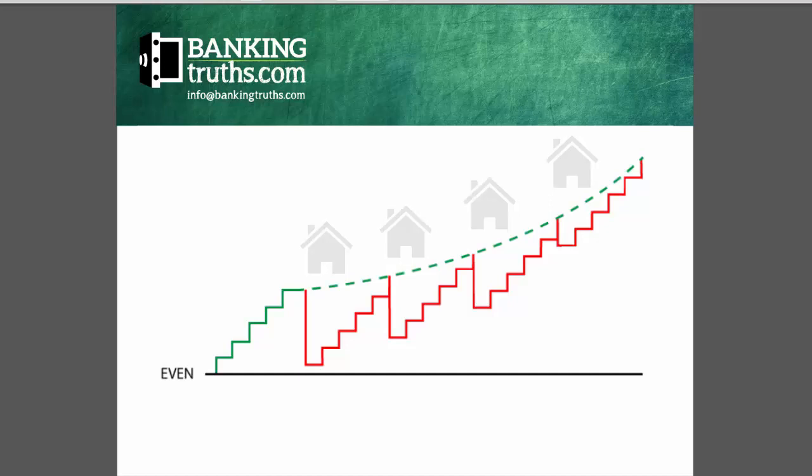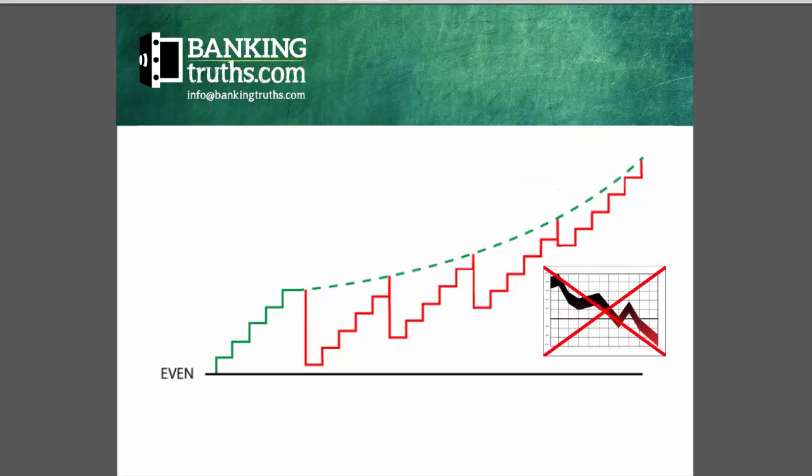Now, it helps, too, that the asset class we've chosen also happens to grow each and every year at a very favorable rate of return, one that does not start with a dot. And it's immune to market losses and immune from taxes as well. All these things work in its favor.